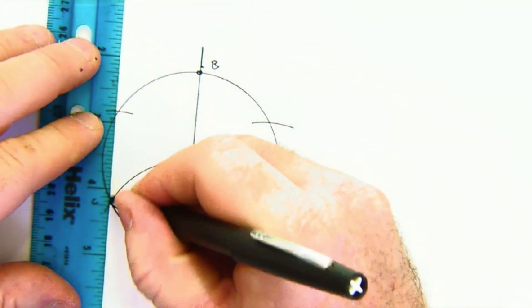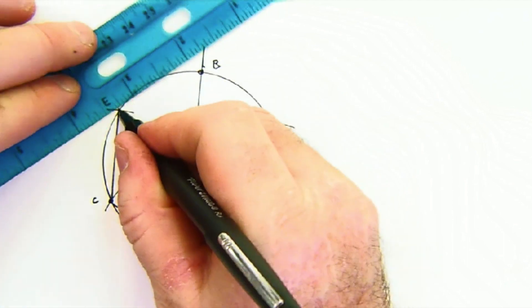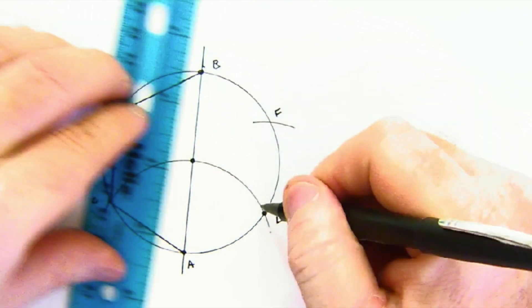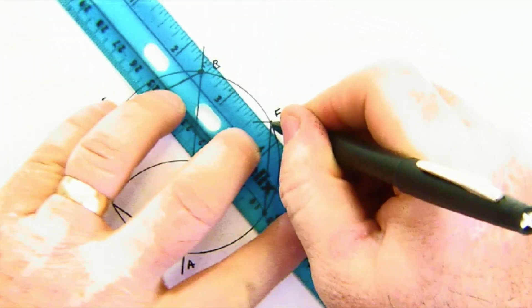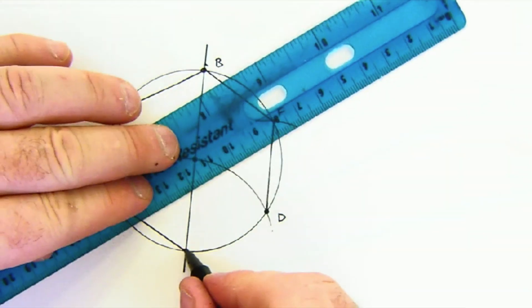So these points here, better do some more labeling here. E up to F over here. There's our hexagon.